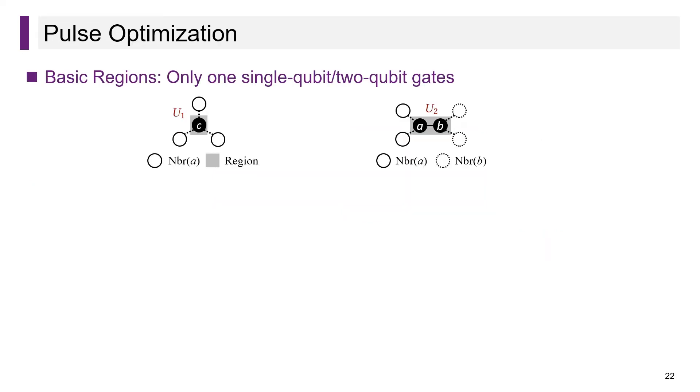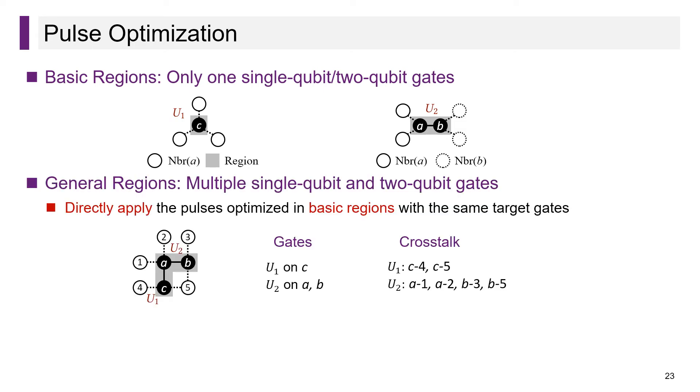For the first challenge, the key to addressing it is that we focus on cross-region crosstalk. To say this, suppose that we have optimized our single-qubit gate u1 and our two-qubit gate u2 individually. And this optimization suppresses cross-region crosstalk surrounding each gate, which we show with dashed edges. When we need to apply u1 and u2 in parallel, we do not need to optimize again but can directly apply the previously optimized pulses. Though the three qubits now form a new region, we can find that all the cross-region crosstalk is still suppressed by the pulses. Actually, this result holds for arbitrary general regions, and it means that our approach is scalable, as we only need to optimize pulses in basic regions over a few qubits and avoid the high overhead for optimizing in general regions.